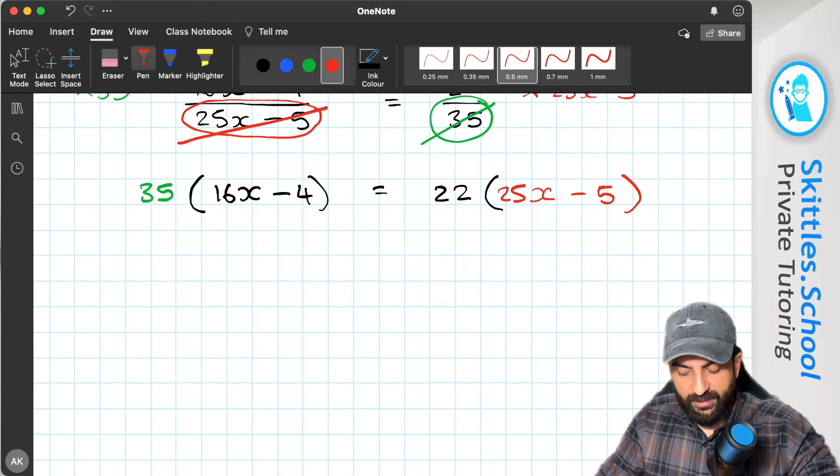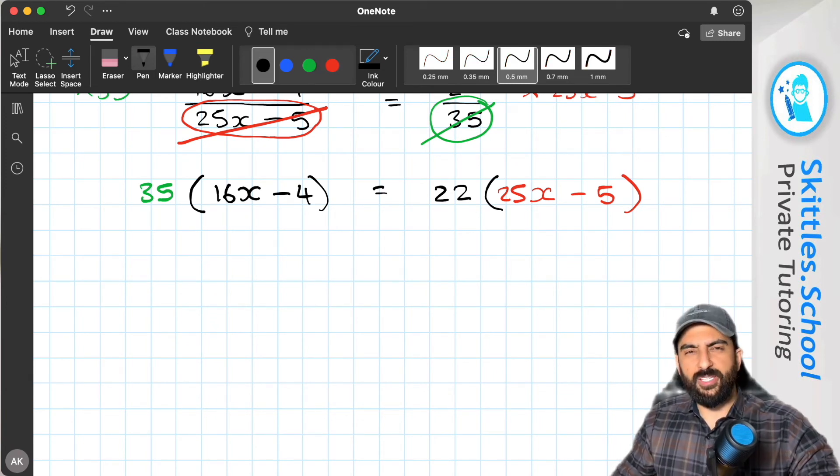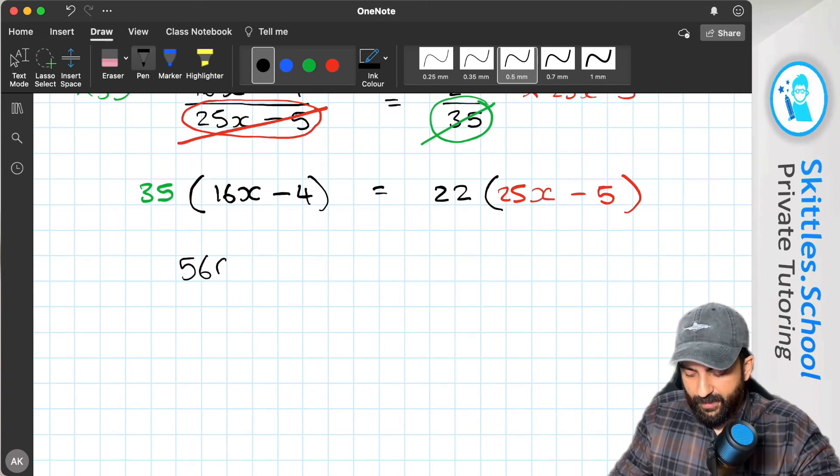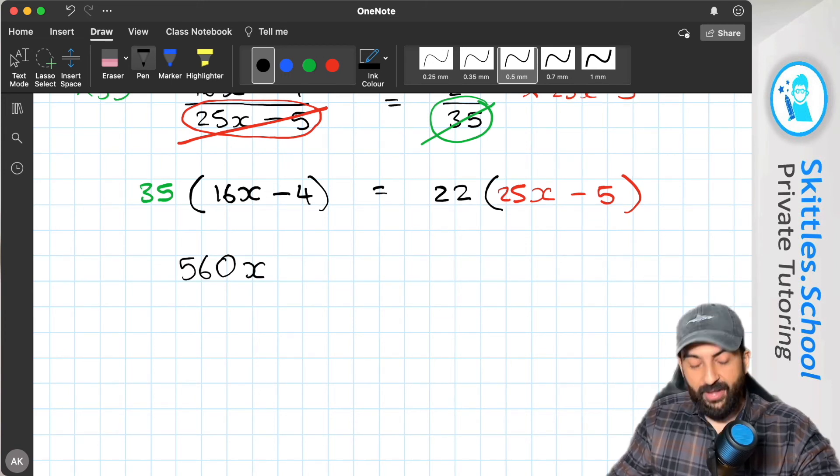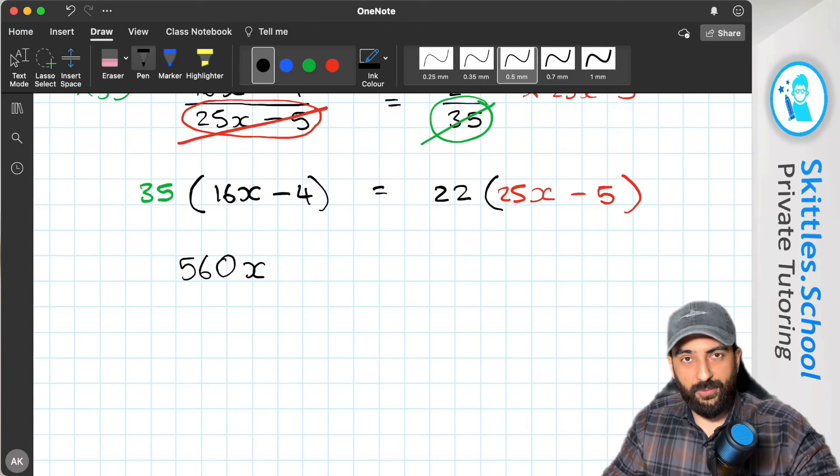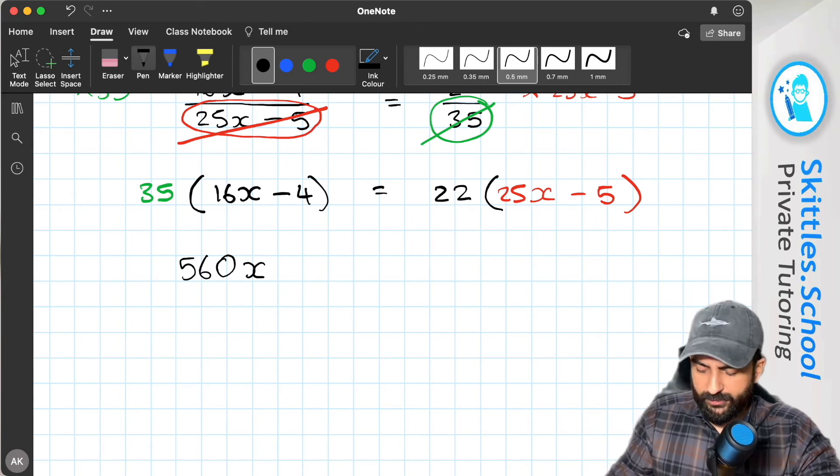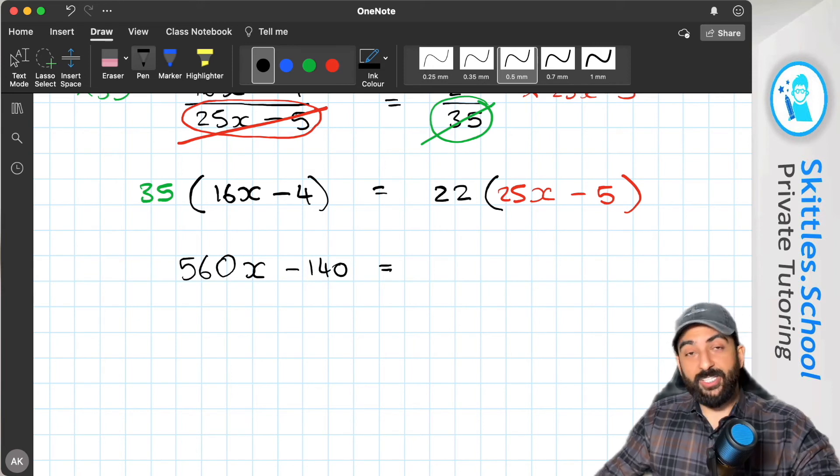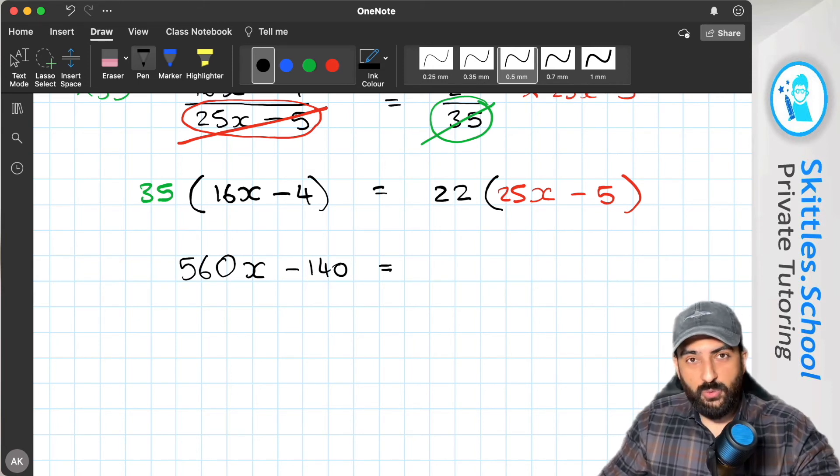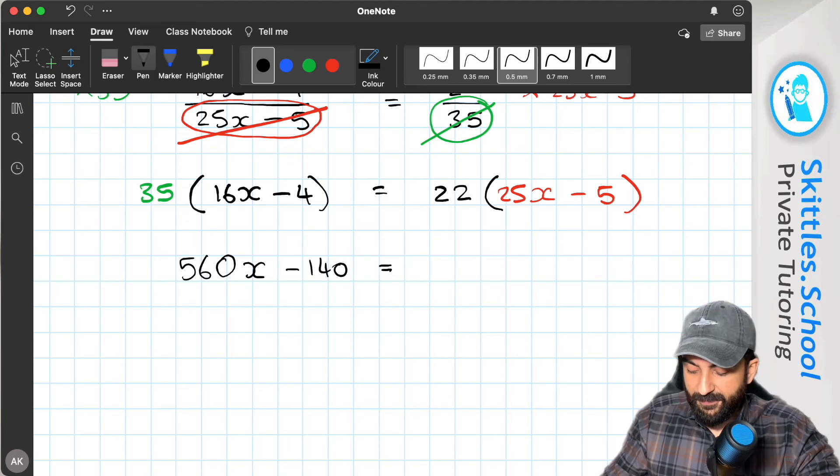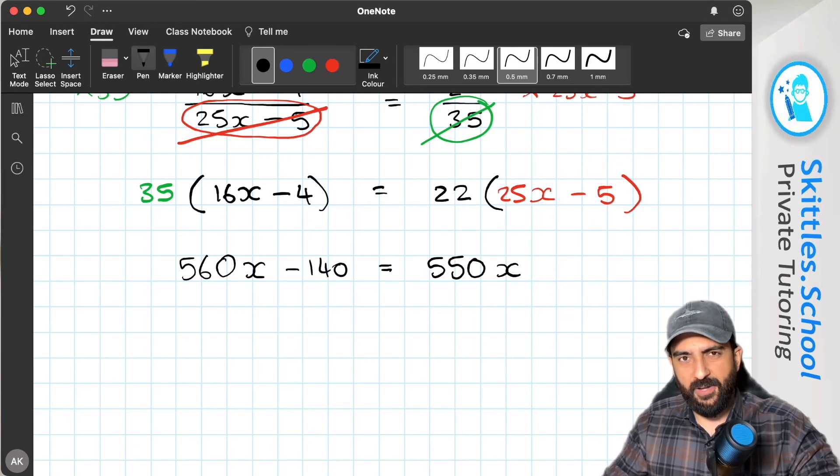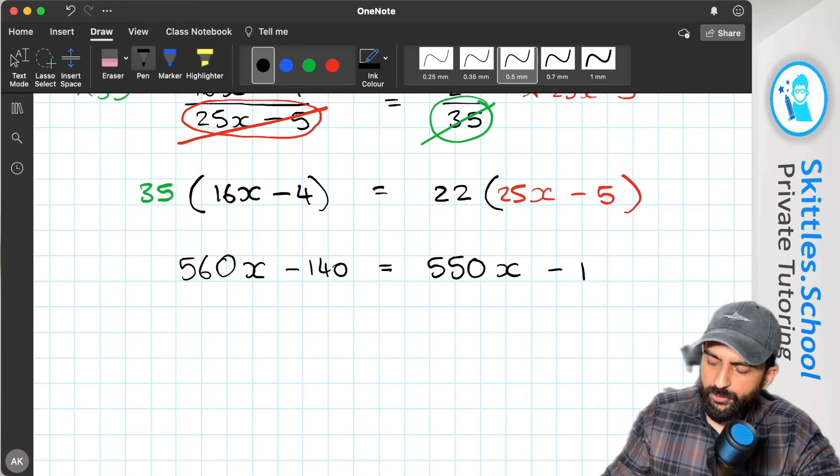So 35 times 16 is 560x. And 35 times minus 4 is minus 140. 22 times 25x is 550x. And 22 times minus 5 is minus 110.